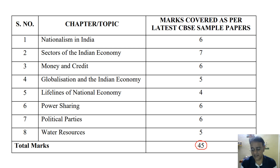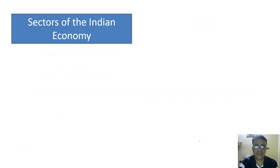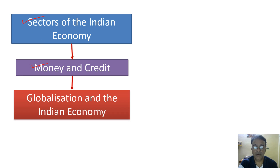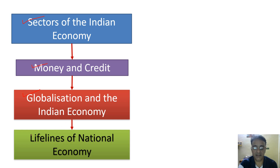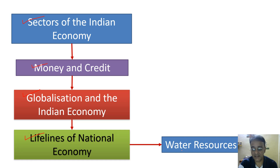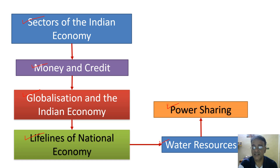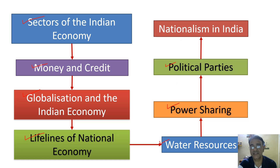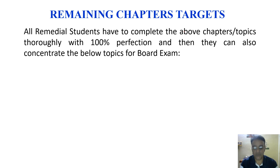Just eight chapters to study. Let me recap the sequence — this is the minimum level learning study syllabus: first, Sectors of Indian Economy; then Money and Credit; then Globalization and the Indian Economy; then Lifelines of National Economy; then Water Resources; then Power Sharing; then Political Parties; and last, Nationalism in India. After that, important questions from the remaining important chapters will also be covered. All remedial students have to complete these eight chapters with 100% perfection.